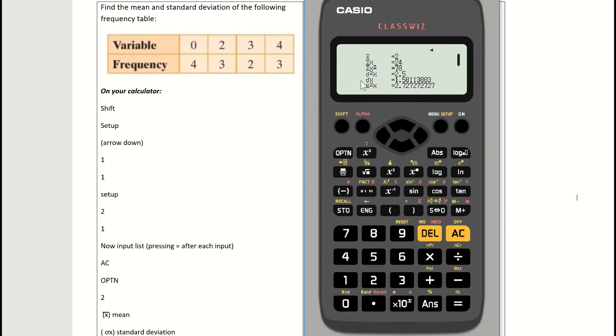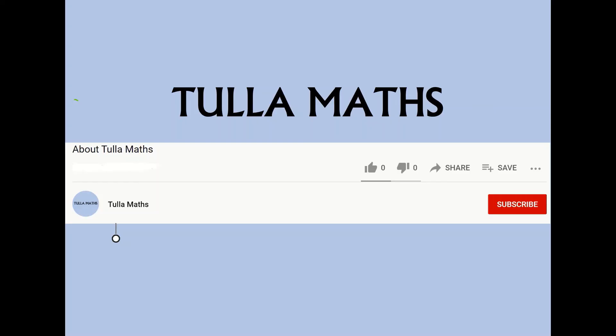And that's how to find mean and standard deviation of a frequency table. If you want to find mean and standard deviation of a list of numbers, check out the second video. Thank you for watching another tutorial video from Tullamaths. Make sure to subscribe.